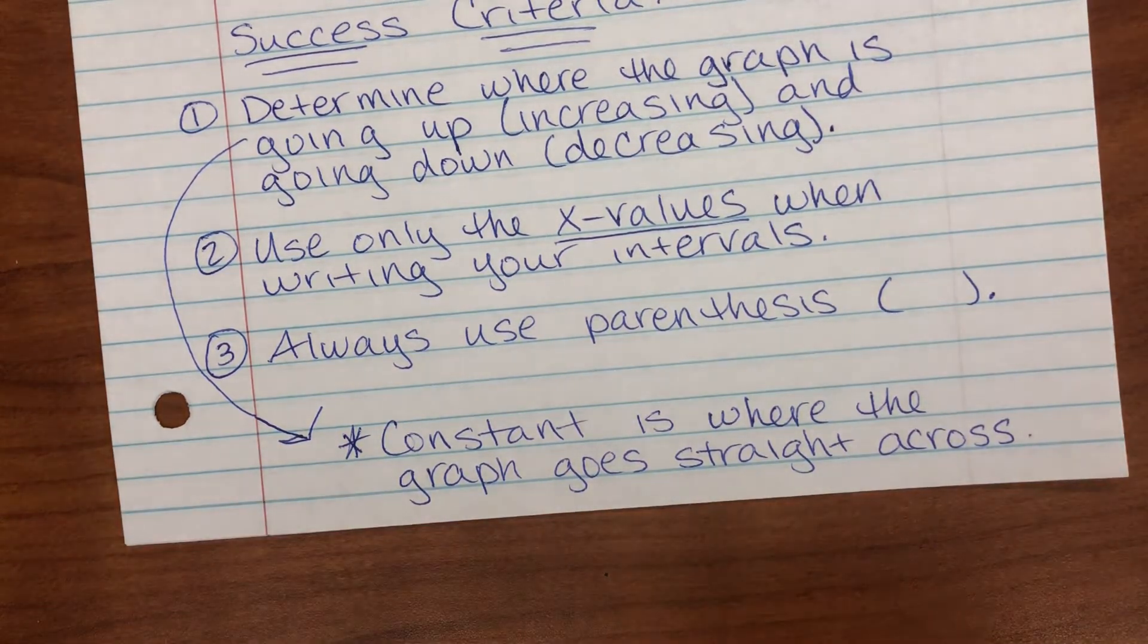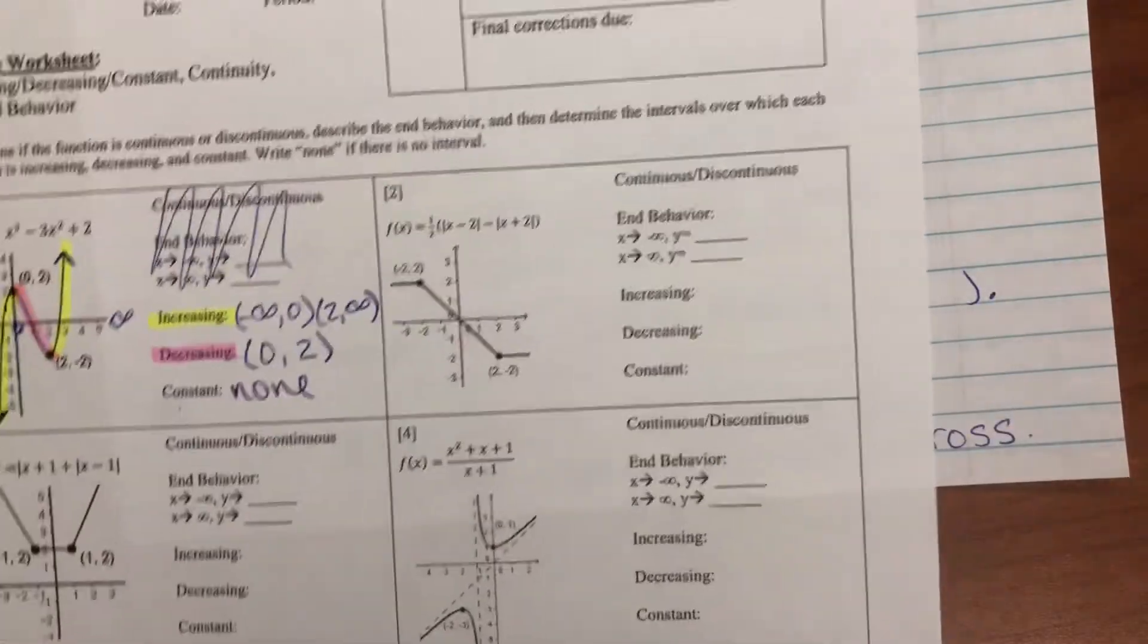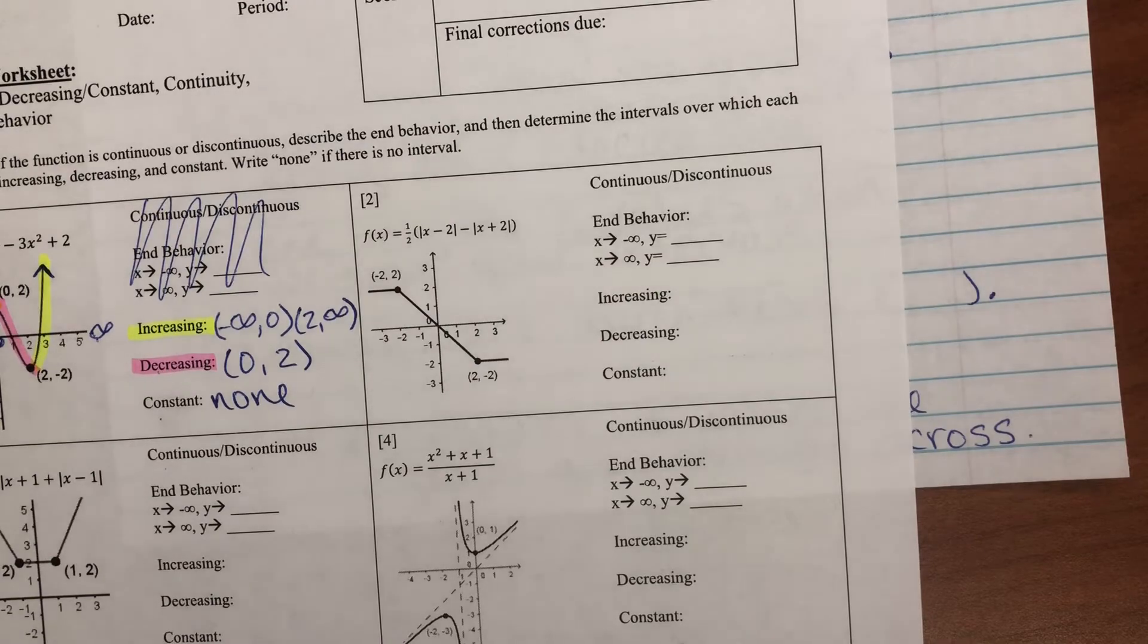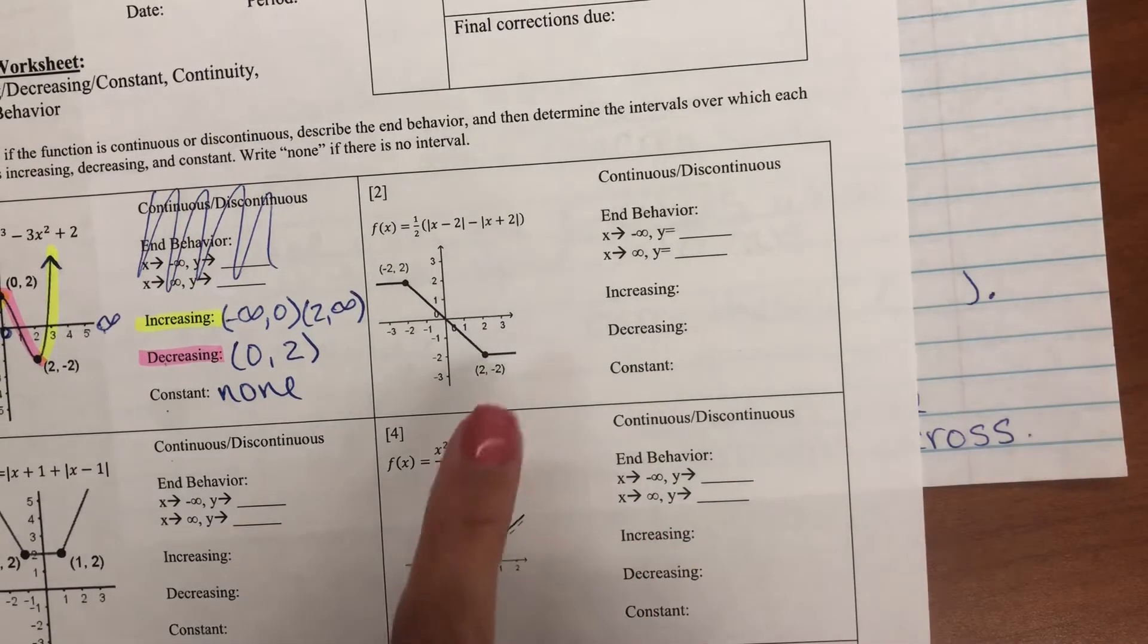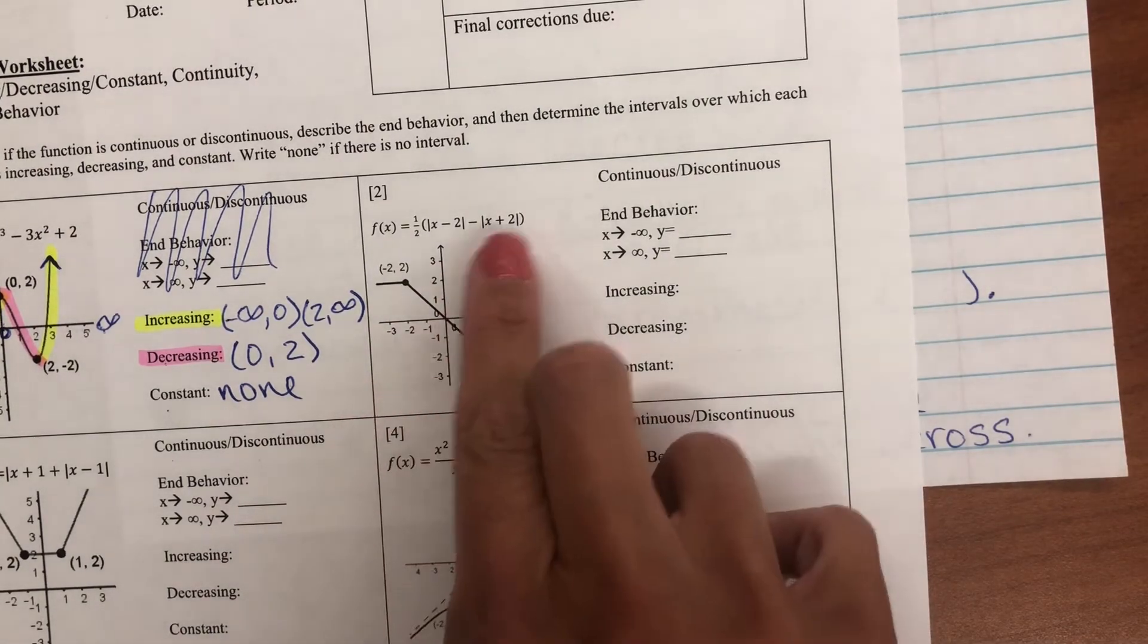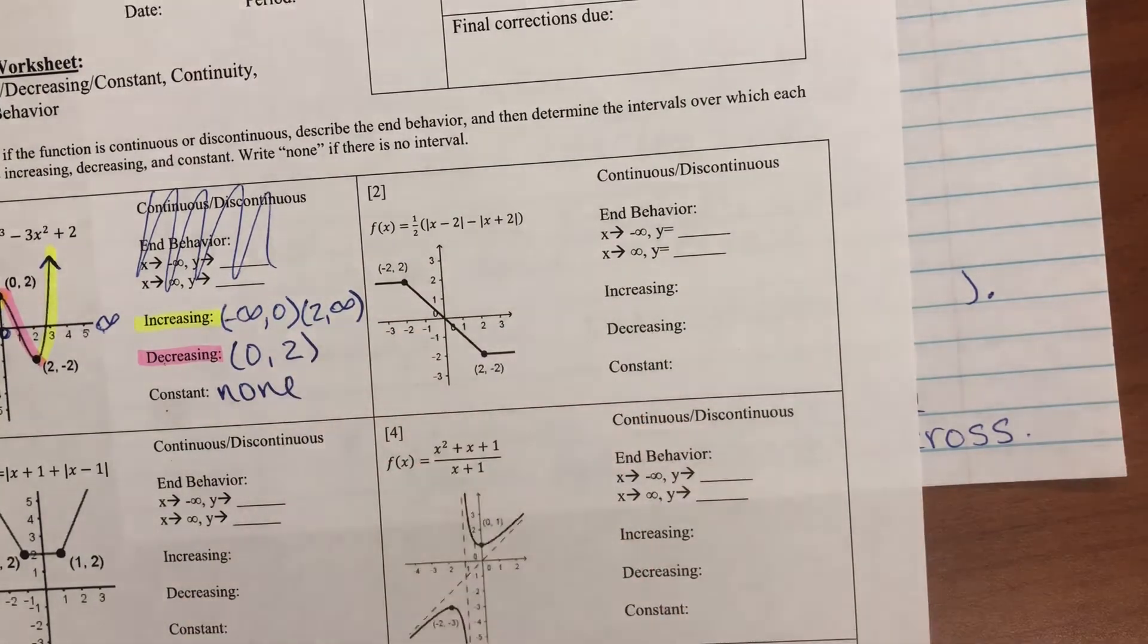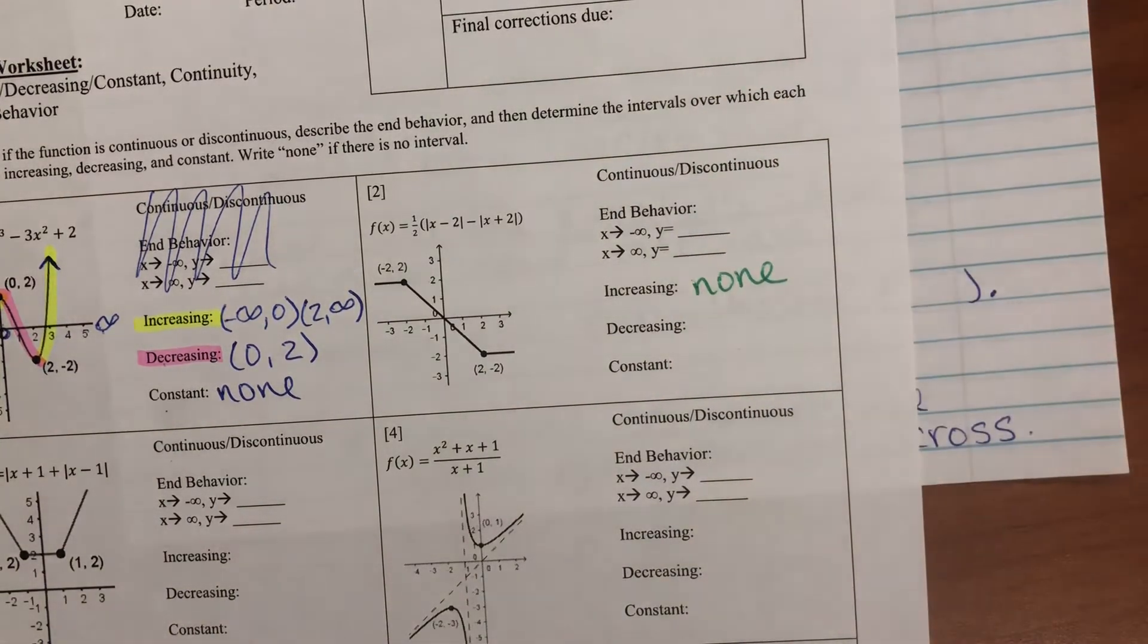Let's do two more examples. Let's look at number two here. Increasing. Increasing is where the graph is going up. The graph is not going up at all in this problem. This is a none. No increasing intervals.